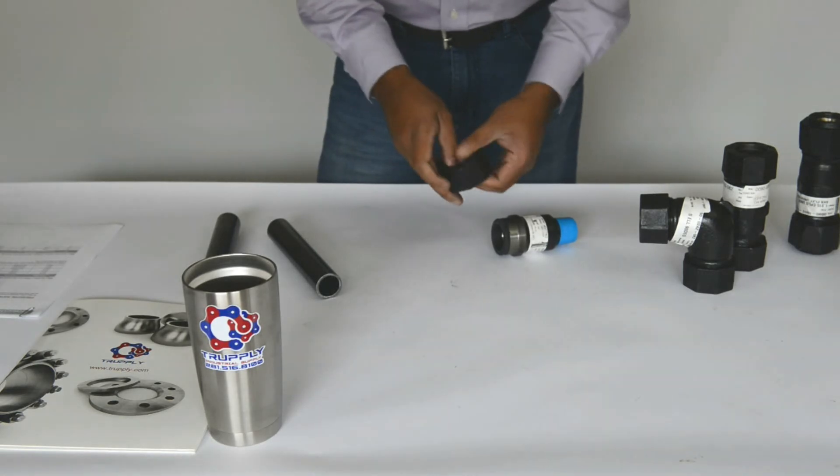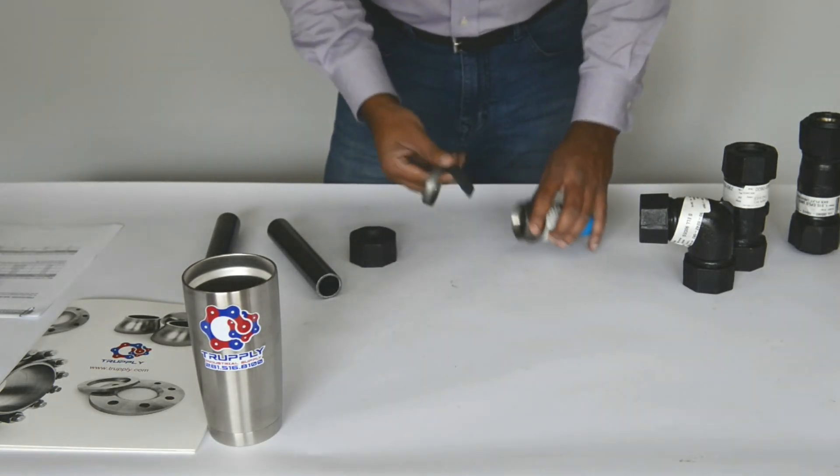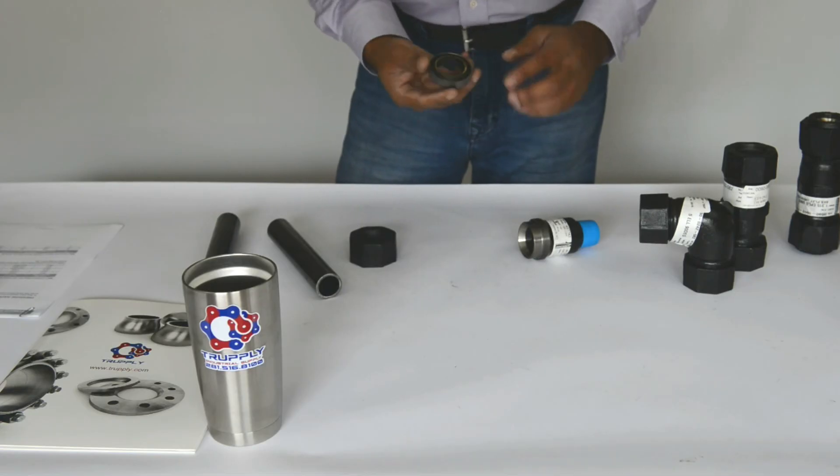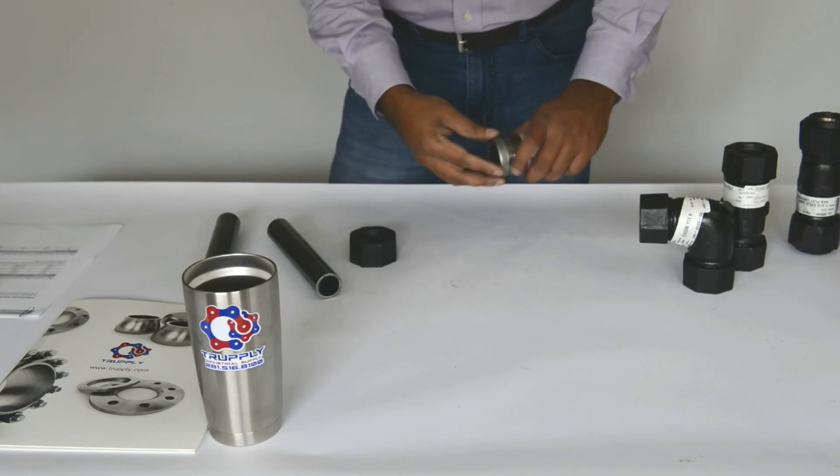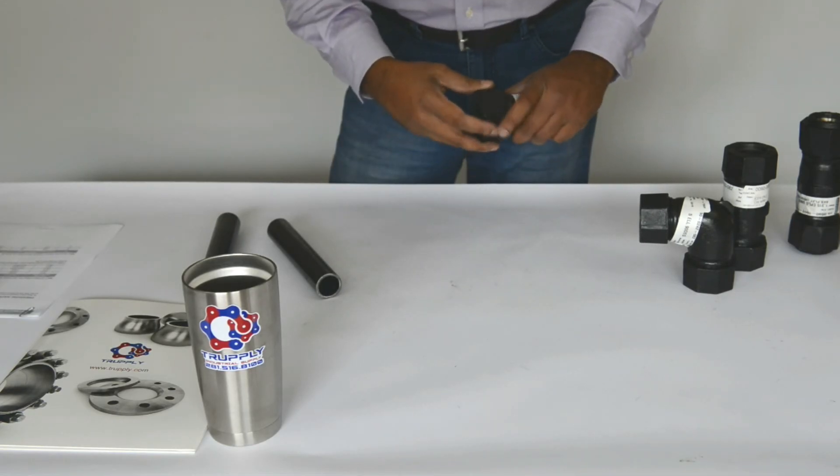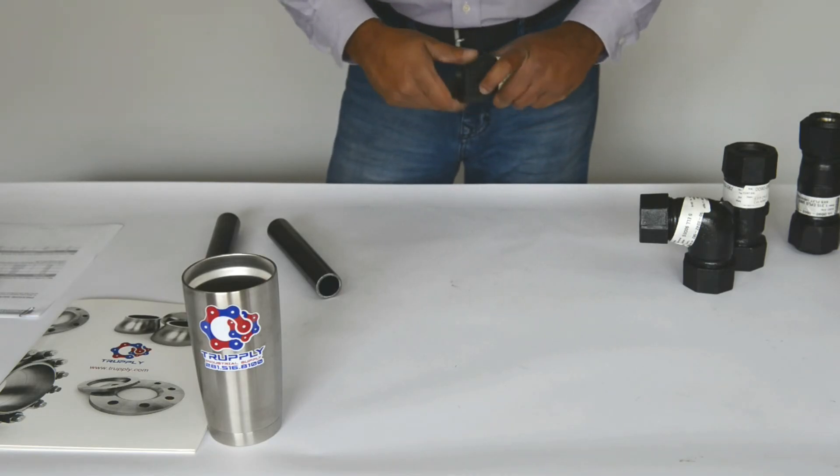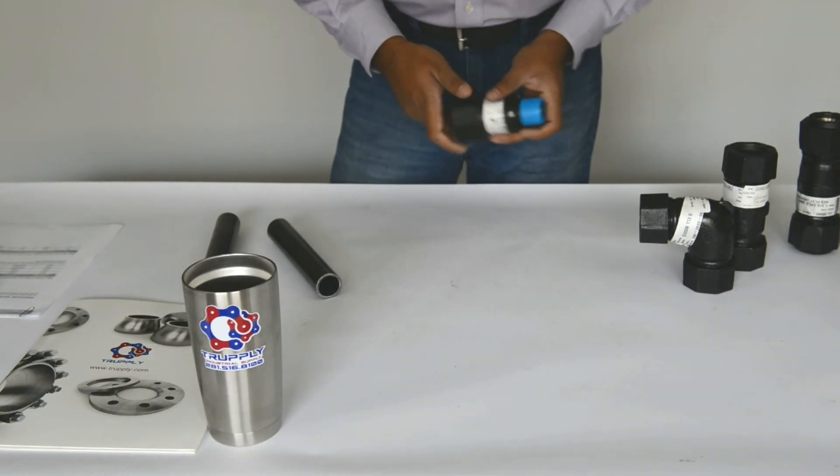And then the other end now becomes a compression coupling, which is exactly like the other ones. This also has a retainer cup and the gasket. And then installation is exactly the same. So the male adapter allows you to convert any regular threaded connection into a compression fitting.